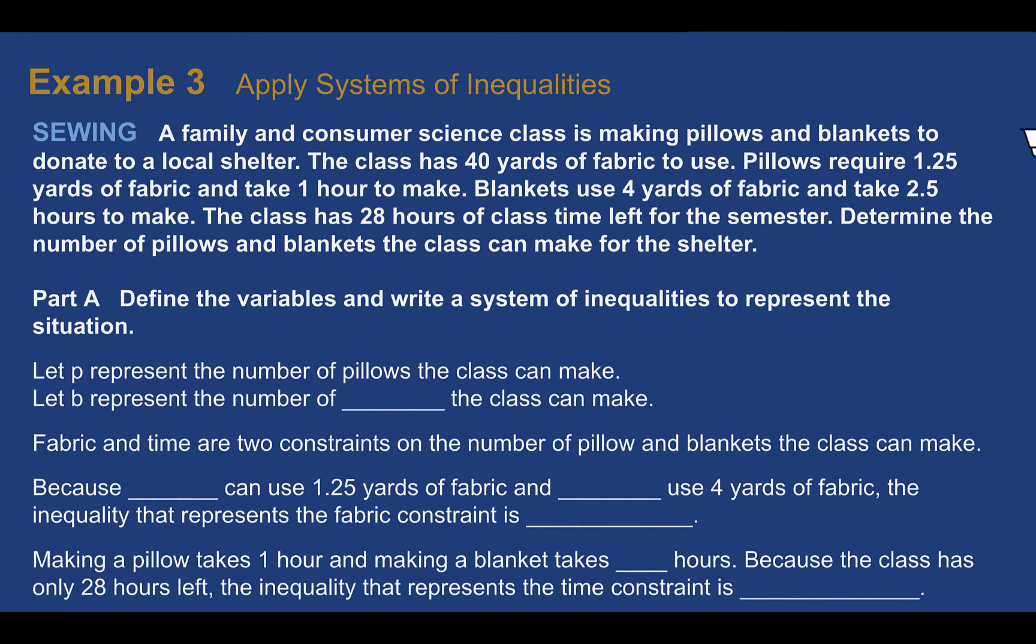Example 3. Apply systems of inequalities. Our real context here is sewing. A family and consumer science class is making pillows and blankets to donate to a local shelter. The class has 40 yards of fabric to use. Pillows require 1.25 yards of fabric and take 1 hour to make. Blankets use 4 yards of fabric and take 2.5 hours to make. The class has 28 hours of class time left for the semester. Determine the number of pillows and blankets the class can make for the shelter. So reading through here, we have two things we're really talking about, the yards of fabric, and the hours or the time for the class. So let's define some stuff. First, for our variables, P can be the number of pillows. Logical. Starts with the same letter. So B must be the number of blankets.